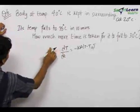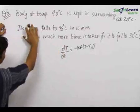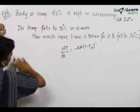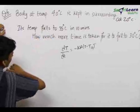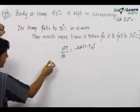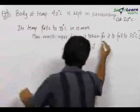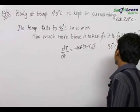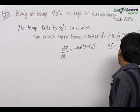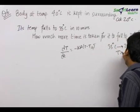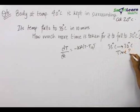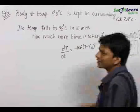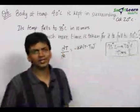We have been given that a body's temperature falls from 40°C to 35°C in 10 minutes. We need to find out how much more time is taken for it to fall from 35°C to 30°C — that is, the time for this second change given the time for the first.